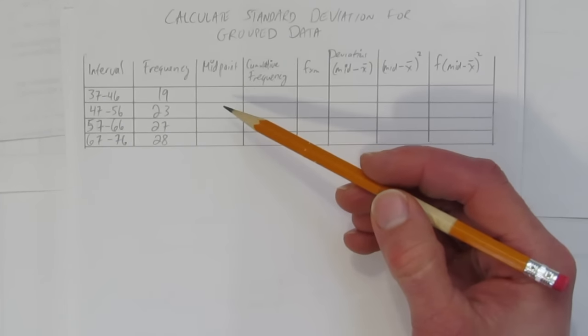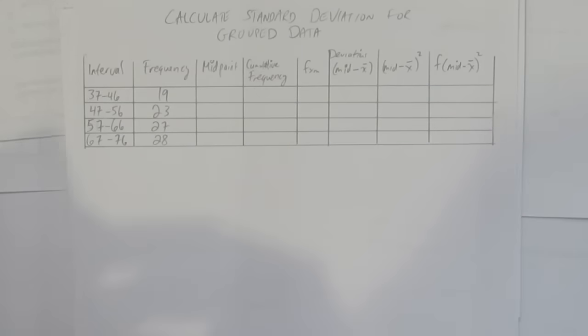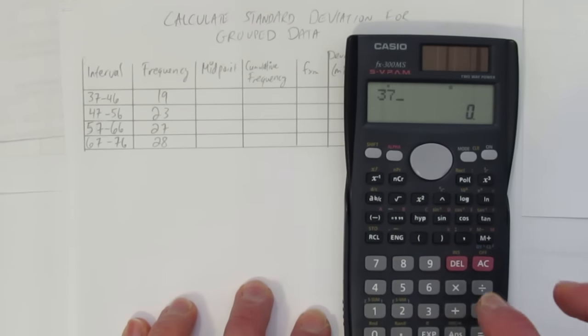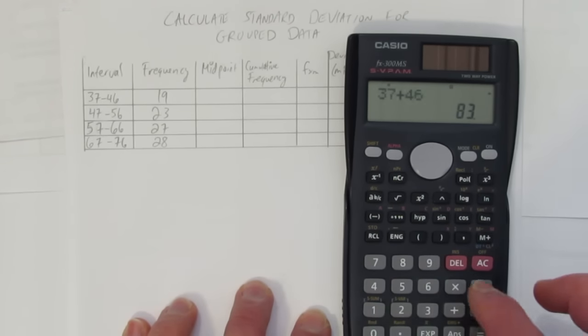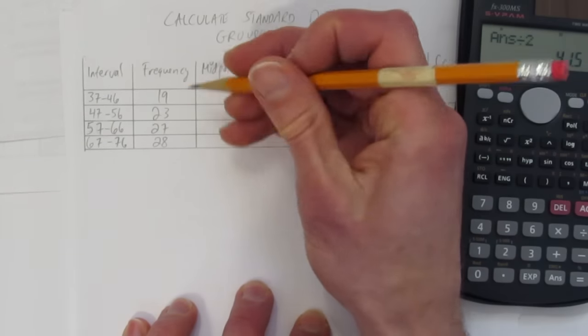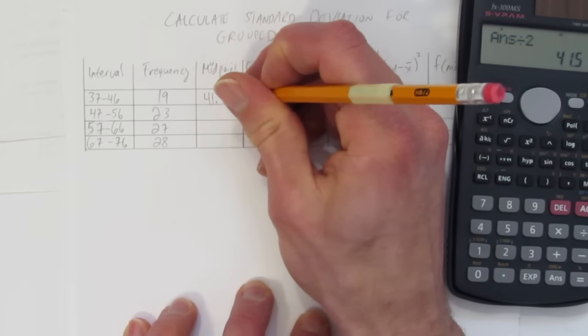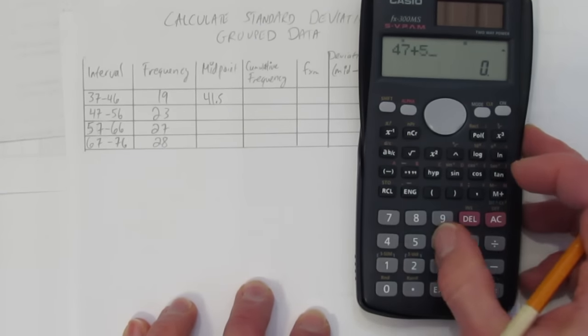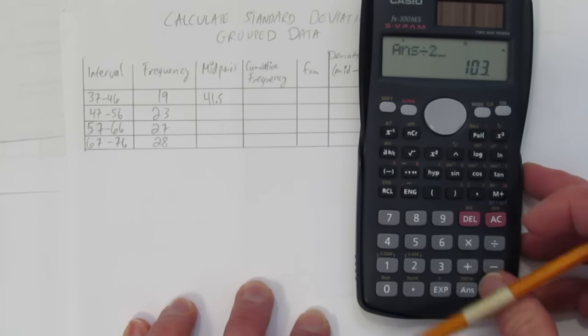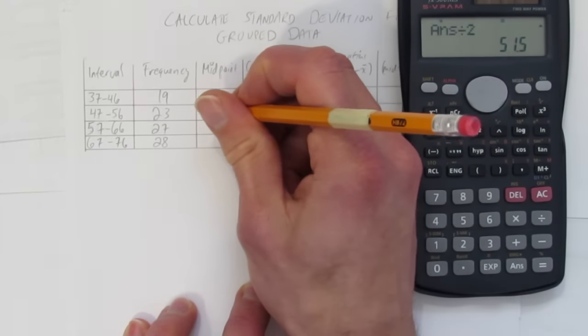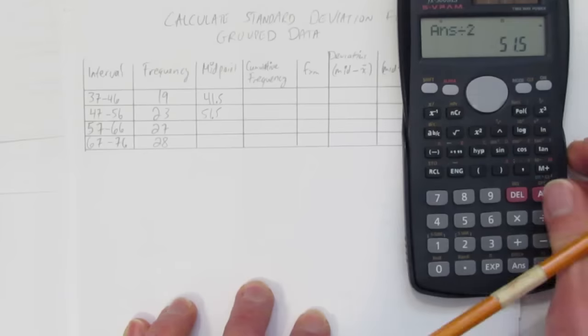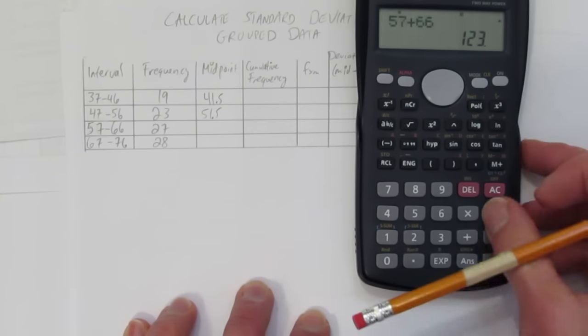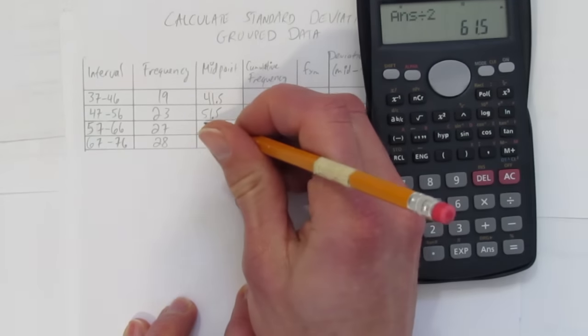The first thing we're going to do is calculate the midpoint. We can do that on our calculator just by going 37 plus 46, dividing by 2. That gives us a midpoint of 41.5. And we'll do the same with the others, though we're going to notice a pattern pretty quick. 51.5, you can probably predict what the next one will be without doing much math, just by adding 10. But we'll check, just to be sure. 61.5.